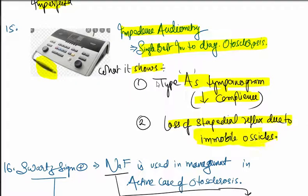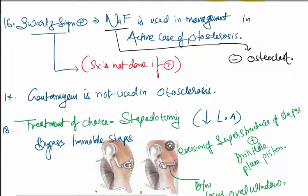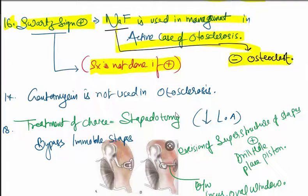If Schwartz sign is positive, this is an active case of otosclerosis where surgery is contraindicated. Sodium fluoride is used in management. What is the function of sodium fluoride? It inhibits osteoclast cells.